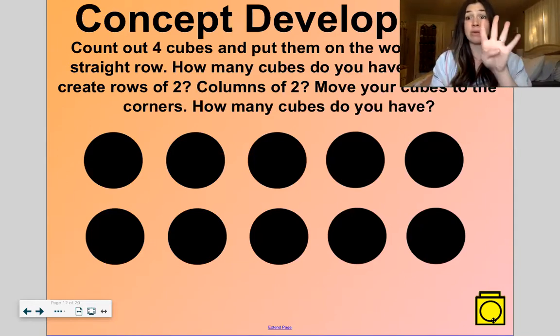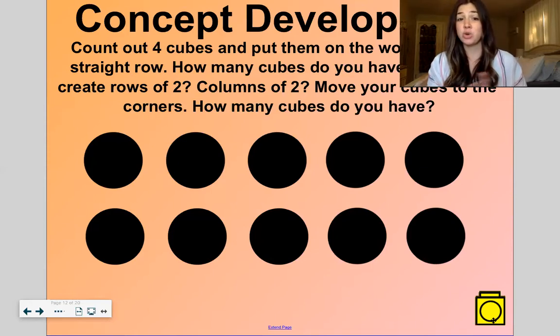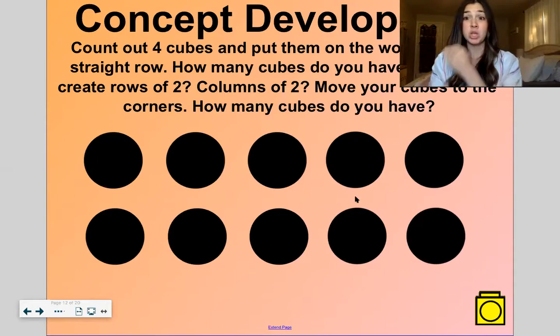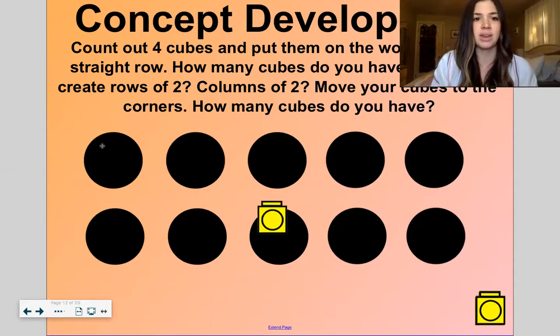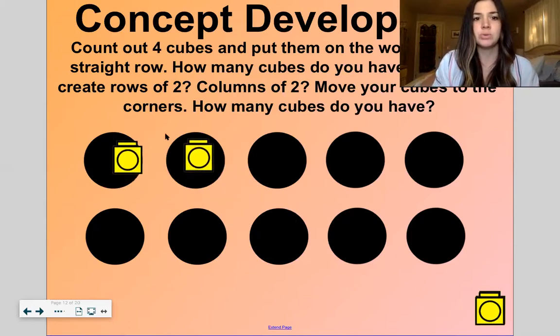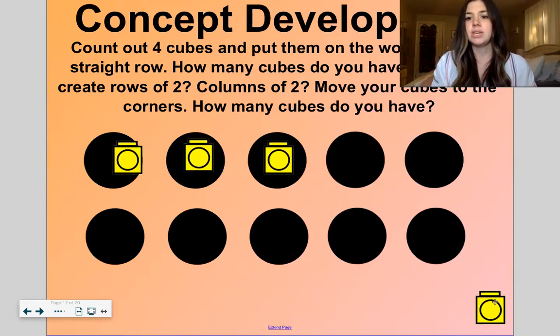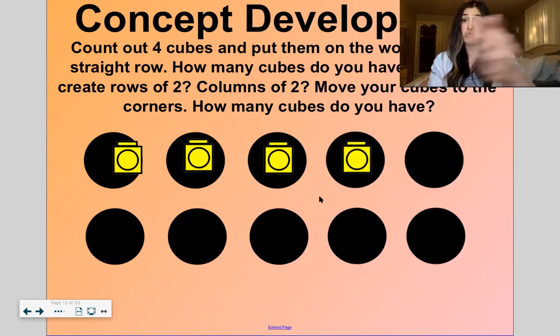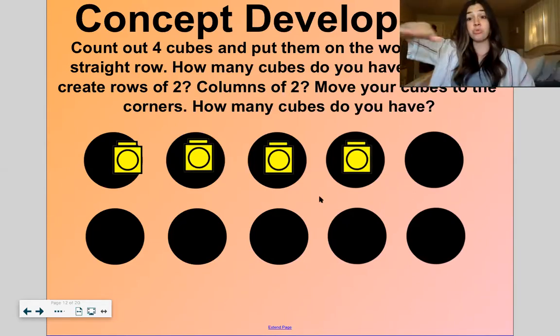So I'm going to count out four cubes. If you have something to count with, let me count out four of them and let's put them in a straight row. I'm going to put them on my dots here. You can just put them on a straight row on the ground or table wherever you're sitting. Okay ready? One, two, three, four. So this is a row. A row goes across.